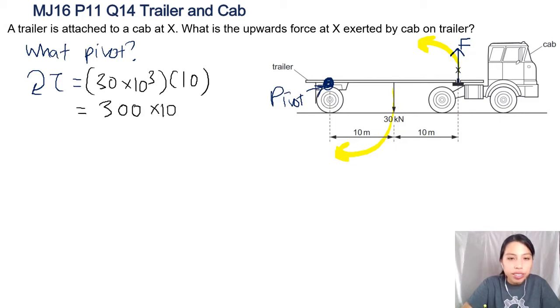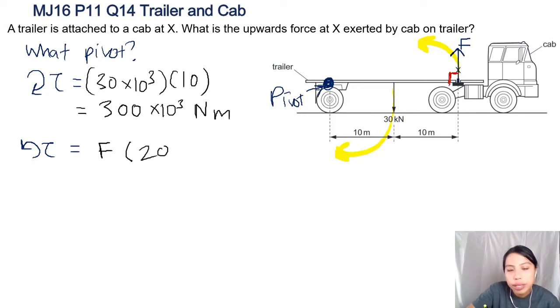How about anti-clockwise torque? Anti-clockwise is because of that force. Do we know the force? No, we don't know the force, but we do know it's perpendicular so that saves us some trouble - no need for sines and cosines. Force times distance, so force times the distance in total is 20 meters, so just 20F. Now they both - both torques have to be balanced because the trailer is just steady, chilling. So you can say the clockwise torque equals the anti-clockwise torque.